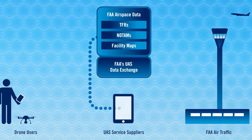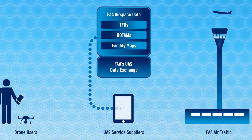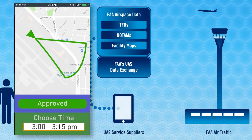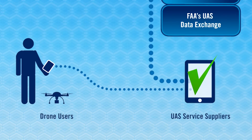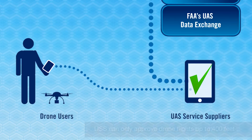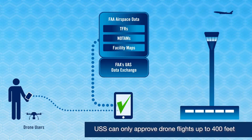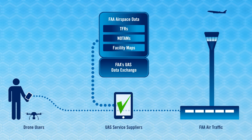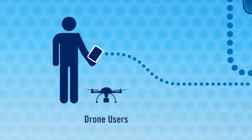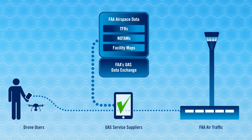Step 1: The FAA provides airspace data to the USS through the FAA's UAS Data Exchange. Step 2: The USS creates interactive planning tools of controlled airspace up to 400 feet, based on that FAA data. Step 3: Drone pilots request airspace authorizations through the apps on their smartphones or desktop computers. Step 4: The USS sends the applicant's authorization information to the FAA. Once the FAA provides an electronic acknowledgment of receipt, the USS transmits FAA authorizations to the drone pilot. This all happens in a matter of seconds.